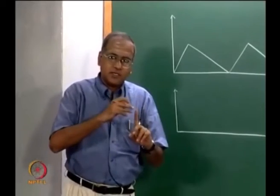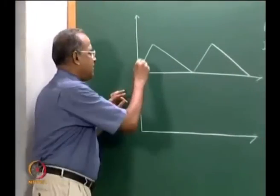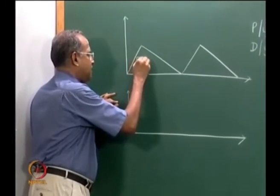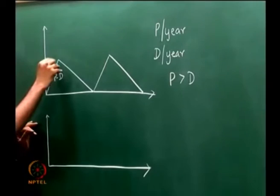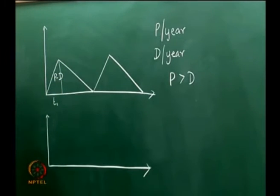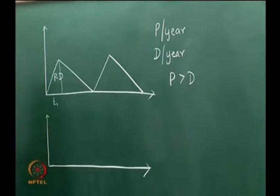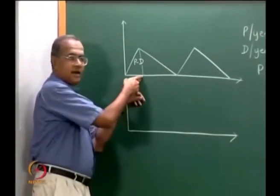Since the production rate is higher than the consumption rate, there is an inventory buildup at the rate of p minus d here, and we produce up to a particular time t1. Then we stop production and consume from the inventory that has been built up. So we stop production here after t1.